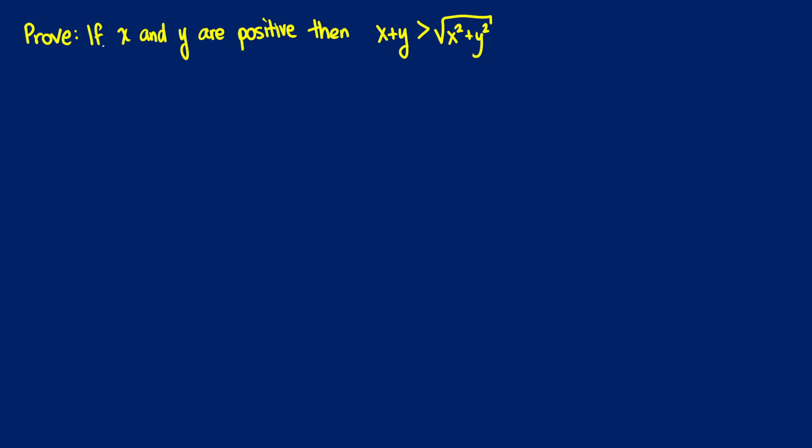So in order to do this, we have to make an assumption. We're going to assume two things: that x is greater than 0, and that y is greater than 0 because they're positive.